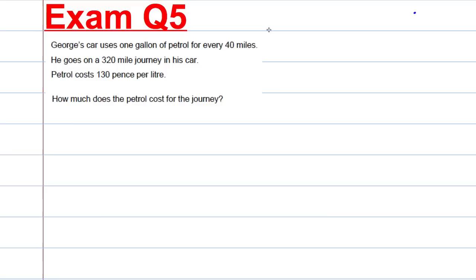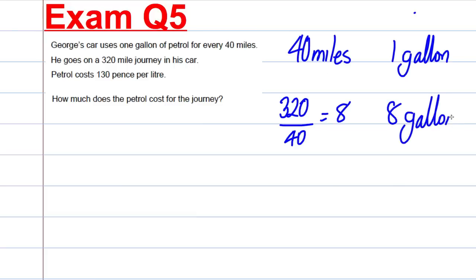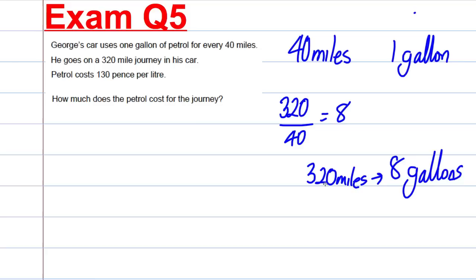Question 5, George's car uses 1 gallon of petrol for every 40 miles. So for 40 miles, it's 1 gallon. He goes on a 320-mile journey. So 320 divided by 40 is 8. So therefore, he must use, if every 40 miles is 1 gallon, 320 miles must be 8 gallons. Therefore, 320 miles, he must use 8 gallons.